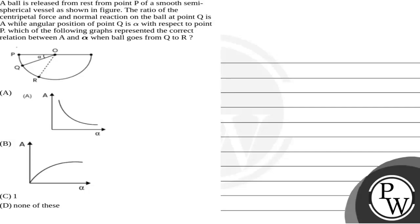Let's read the question. The question says that a ball is released from rest from point P of a smooth semi-spherical vessel as shown in figure.